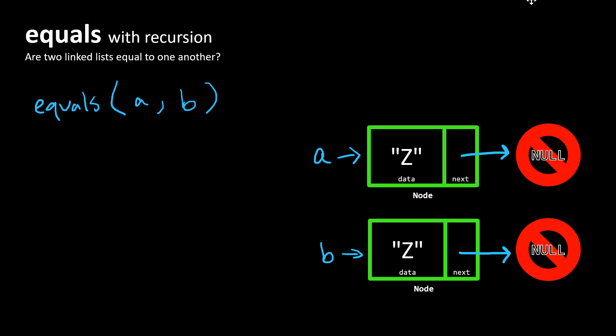How do we make this statement of equality programmatically? There are three conditions we have to care about. The first condition is: are their data properties equal?